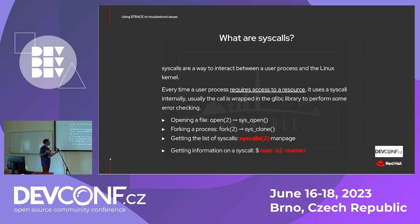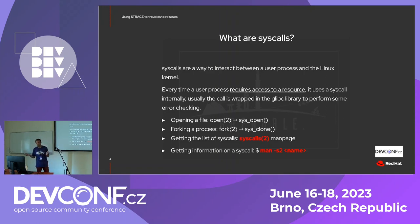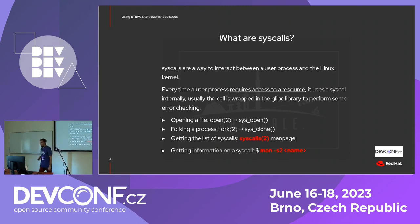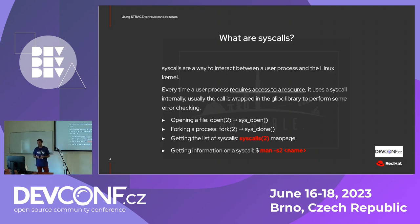Usually there's a simple mapping, but not always. For example, when you create a child using fork, it's not fork that is used anymore — it's clone. You can have a list of all the syscalls available on your system using the syscalls man page, section 2. It depends on the architecture. And when you want to know more about a specific syscall, you use man section 2 and then the name of the syscall without the sys_ prefix.